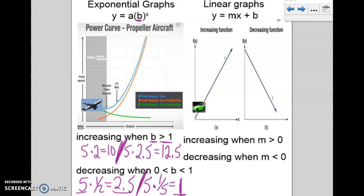Now what causes linear graphs to increase and decrease? It's all about the M value. It's all about the slope. So when the slope is greater than 0, or when it's positive, it increases.